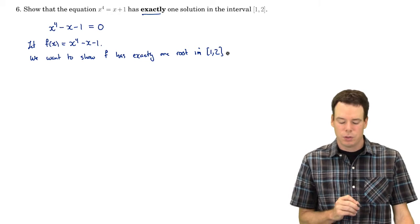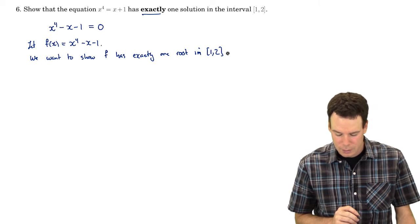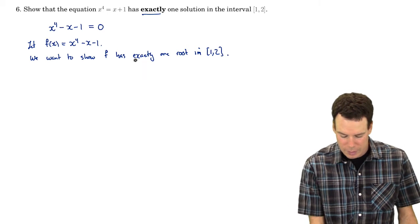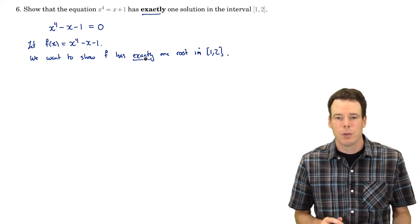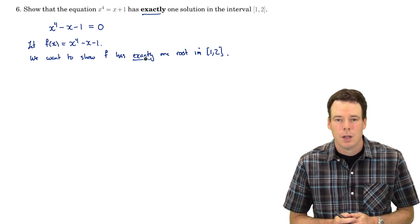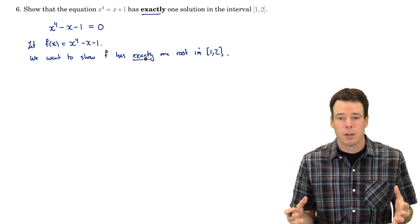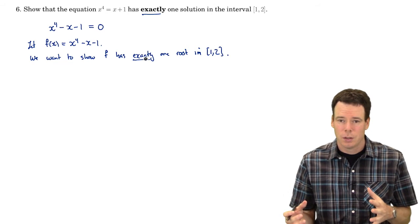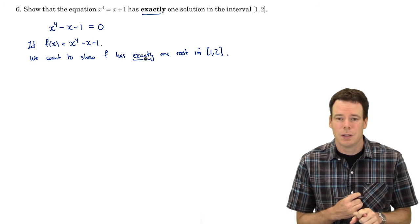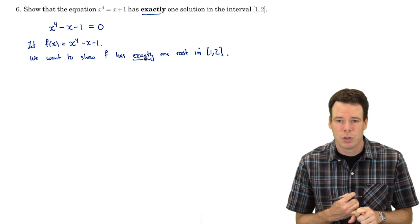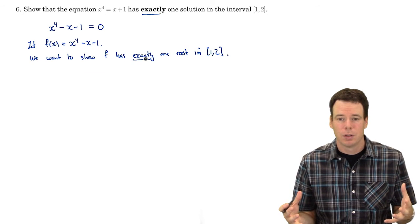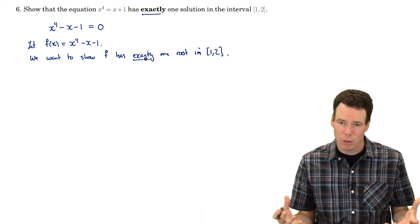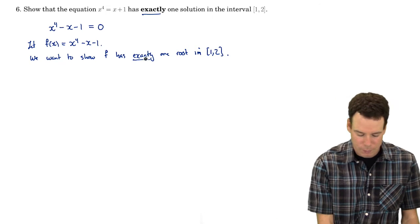So that's our goal: show it has exactly one root in the interval 1 to 2. We're going to work on it in two ways. The first way we're going to use the Intermediate Value Theorem to show that there has to be a root — it could be more than one, but there has to be at least one root.